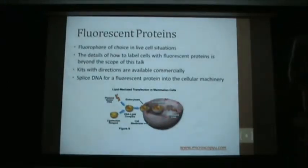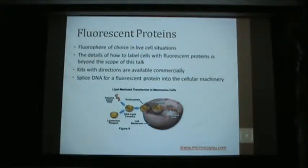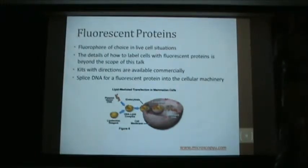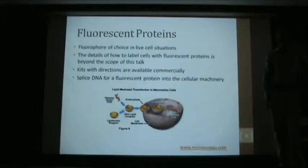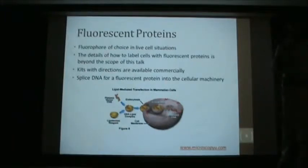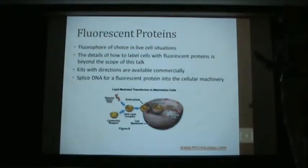Fluorescent proteins: basically you take a chunk of DNA and splice it into the cell you're interested in. It will express the fluorescent protein right after it expresses the protein or structure you're interested in, so you can label specific structures within your cell. They're non-toxic — the cell just does it all by itself. The degree of biochemistry needed to fully understand it is far beyond this course, but know that there are kits — you can just buy a kit with cookbook instructions and get green glowing cells.